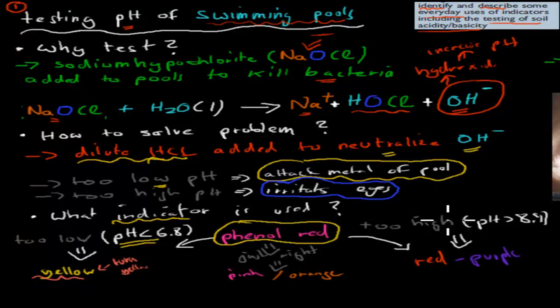On the flip side if it's too high this phenyl red will turn red purple. So if it's too high it will turn red purple whereas if it's just right, so if it has a perfect pH which is in between 6.8 and 8.4, it's usually a pH of about 7, the actual phenyl red is going to be pink and orange.